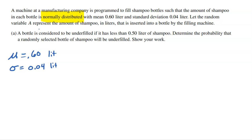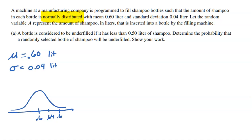A random variable is a variable where we don't quite know the outcome. We know there's supposed to be 0.6 liters in each bottle, but some bottles might get a little bit more, some a little bit less. This follows a normal distribution, so the most likely value is 0.6 liters, but it could be 0.64, 0.68, or even as high as 0.72 — very unlikely — or down to 0.56, 0.52, and 0.48.